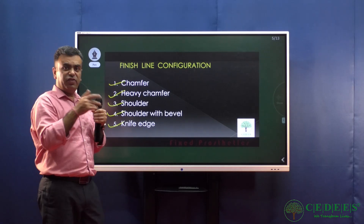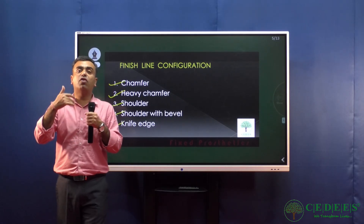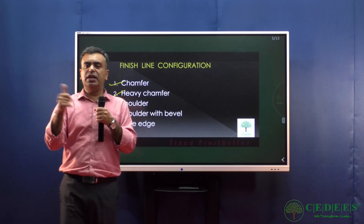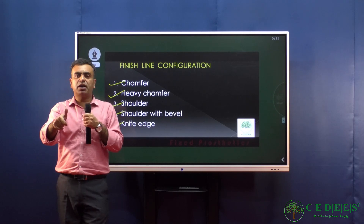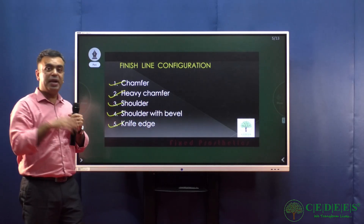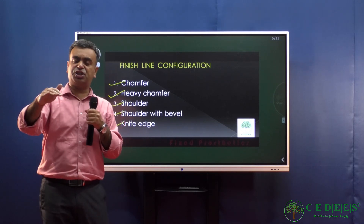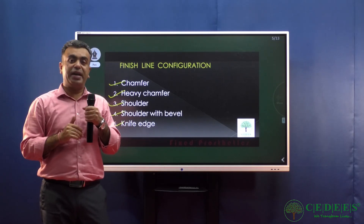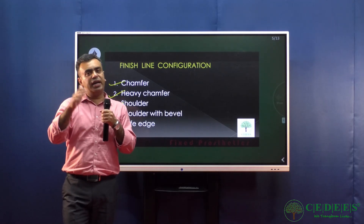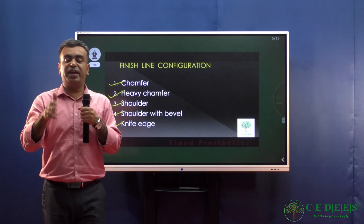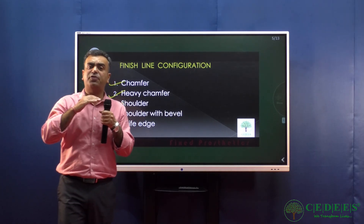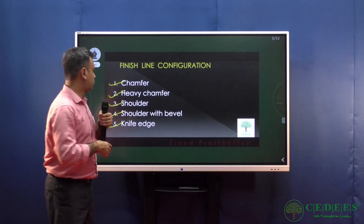A shoulder with bevel is given for inlays and onlays that need to be finished in metal, since metal can be finished in thin sections. For ceramic inlays and onlays, you go back to a heavy chamfer or shoulder. The knife edge, or feather edge margin, is generally not preferred but when used requires precious metal alloys that can be finished in very thin sections.